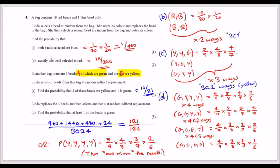Part b: P(exactly one red). This can happen two ways — red then blue, or blue then red. Calculate one combination: P(red) × P(blue) = (19/20) × (1/20). Then double it for both orderings, giving 2 × (19/400) = 19/200.